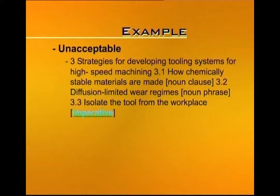When writing parallel sentences, make sure that all headings and subheadings are parallel with other headings and subheadings of the same level, and all entries of the same level in an outline are parallel as well. For example, it would be unacceptable to have the main heading 'three strategies for developing tooling systems for high-speed machining' followed by subheadings in different forms: one as a noun clause, one as a noun phrase, and one as an imperative. You cannot have one strategy phrased as a noun clause, another as a noun phrase, and another as an imperative.